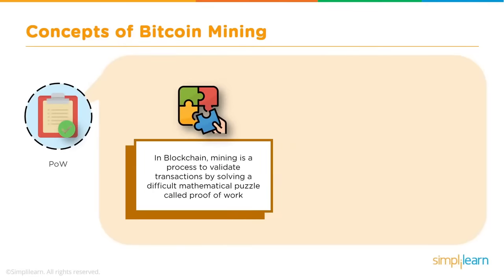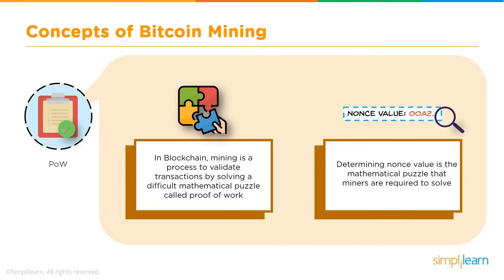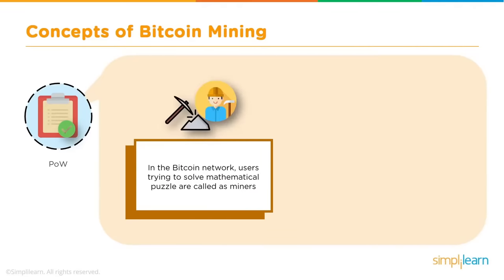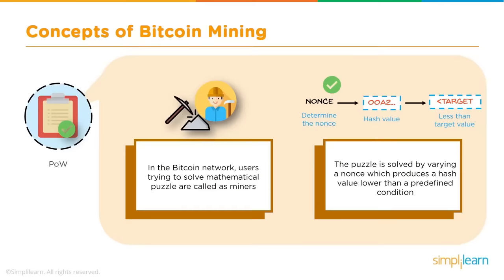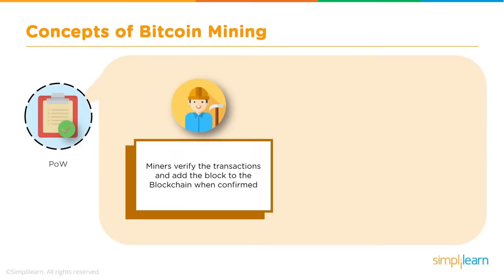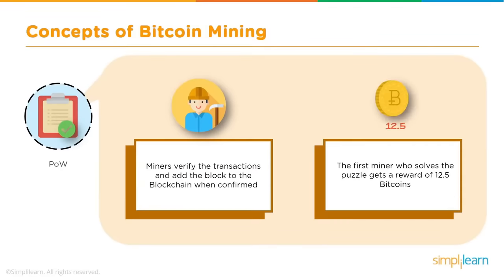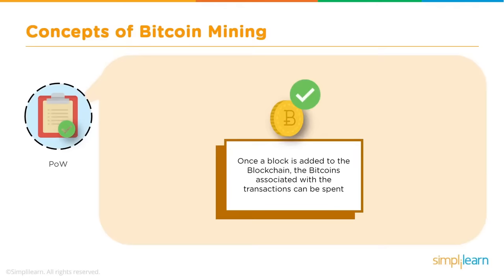The primary objective of the miner is to determine the nonce value — that is the mathematical puzzle miners must solve — to generate a hash that is less than the target defined by the network for a particular block. Miners verify the transactions and add the block to the blockchain when confirmed. As of today, the miner who solves the puzzle receives a reward of 12.5 bitcoins. Once a block is added to the blockchain, the bitcoins associated with those transactions can be spent.